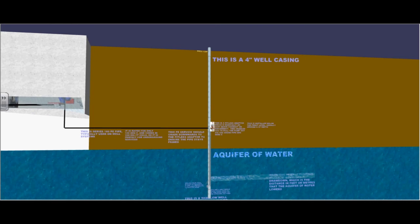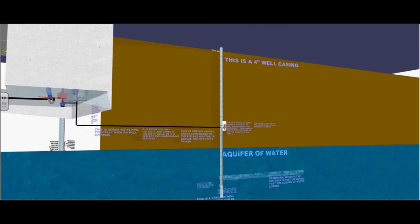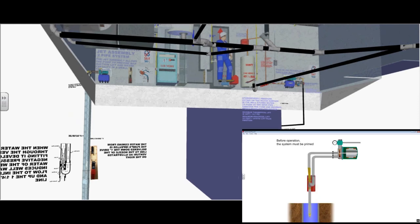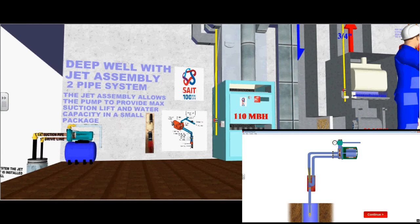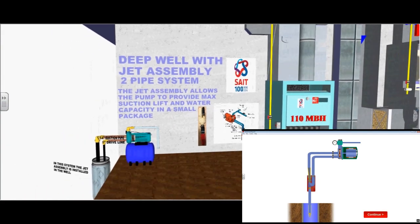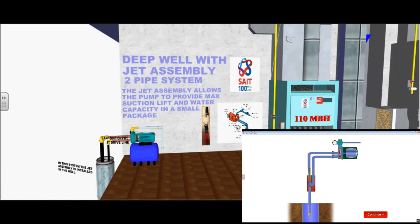This finishes part 1 for shallow well jet pumps. Let's take a look at an example of a deep well jet pump by attaching a jet assembly to a regular pump. The jet assembly allows the pump to provide maximum suction lift and water capacity in a small package.